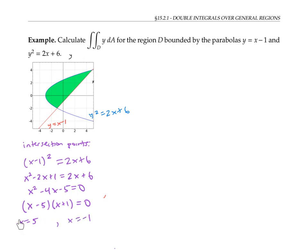Plugging these x values into the original linear equation gives the corresponding y values: y equals four and y equals negative two. So the intersection points have coordinates five, four — that must be this point — and negative one, negative two, which must be that point.